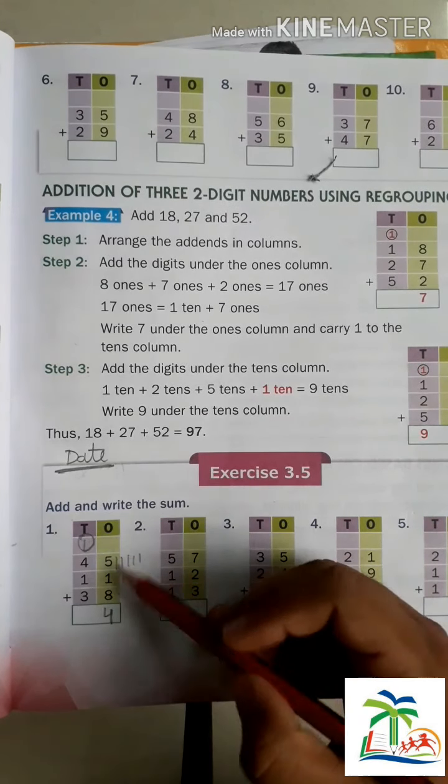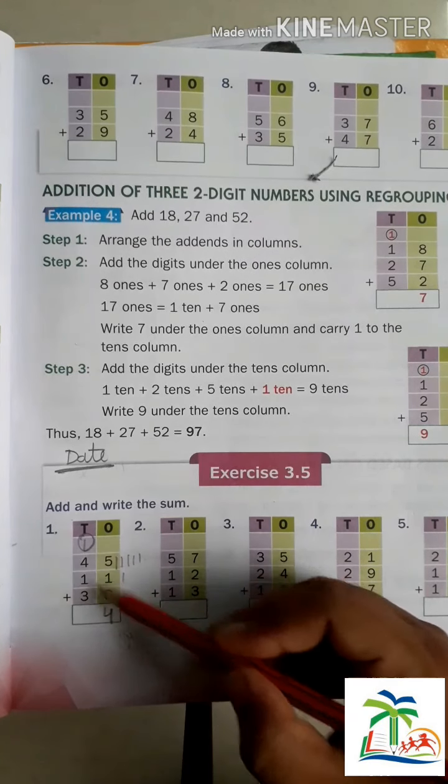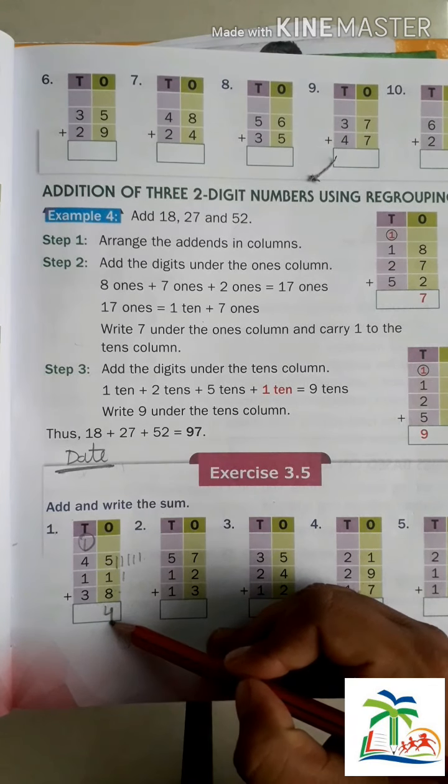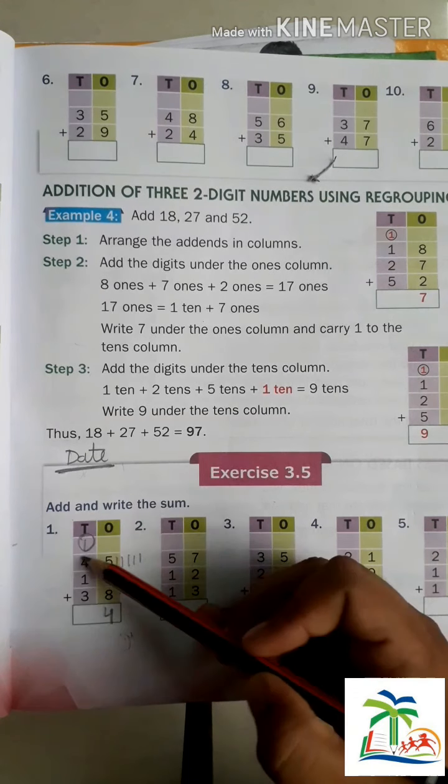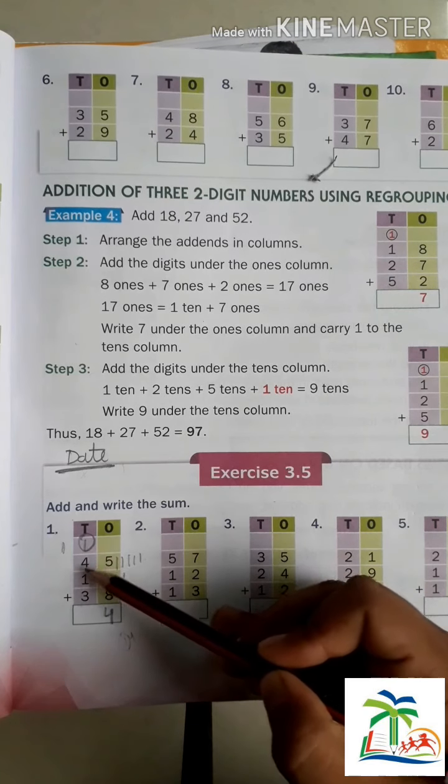Now again we repeat this section. Look at here, 14 came here, so 1 which is in the tens place, we carry it, and 4 we have written in the answer here.